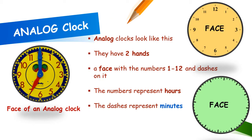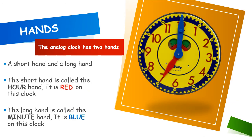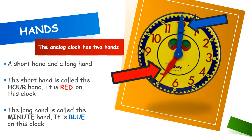This is an analog clock. Analog clocks look like this — they have two hands, a face with the numbers 1 through 12, and some dashes on it. The numbers represent the hours and the dashes represent the minutes. The analog clock has two hands: a short hand and a long hand. The short hand is called the hour hand — it is red on this clock — and it tells us what hour we are at. The long hand is called the minute hand — it is blue on this clock — and it tells us how many minutes we are into the hour. The hands are turned by a mechanism on the inside. If you look at the picture on this slide, you can see a green wheel and a red wheel, and those spin to make the hands spin.